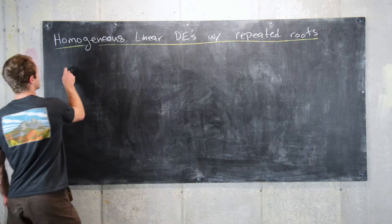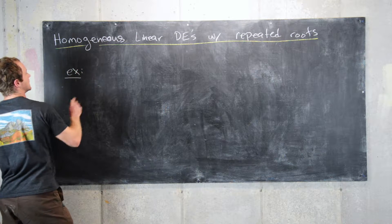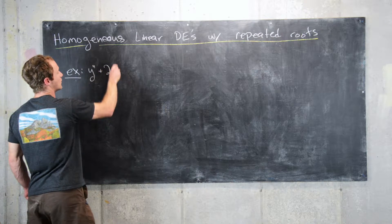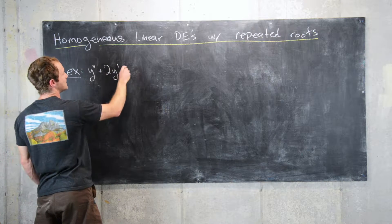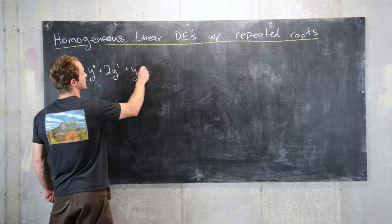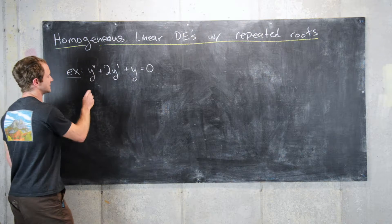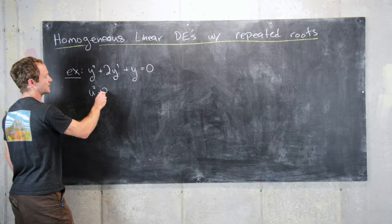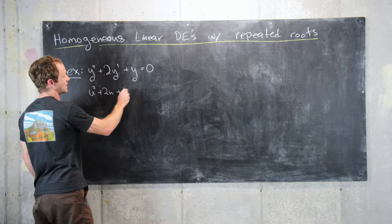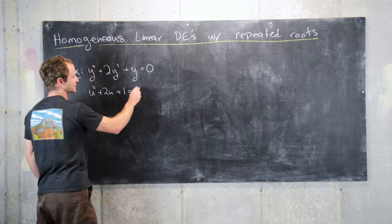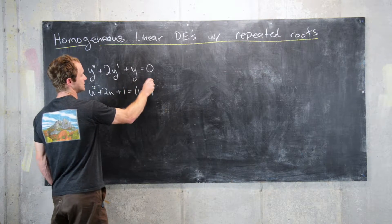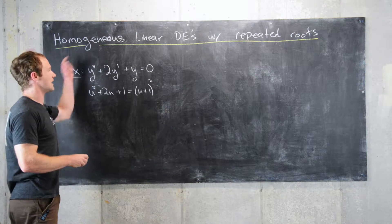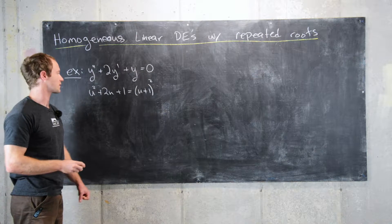For example, if we have y double prime plus 2y prime plus y equals 0. Notice that has a companion polynomial u squared plus 2u plus 1, which factors like (u plus 1) squared. So, this would be an example of the type of differential equation that we want to work with.